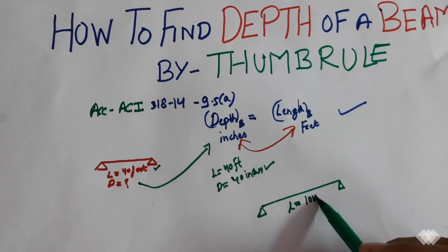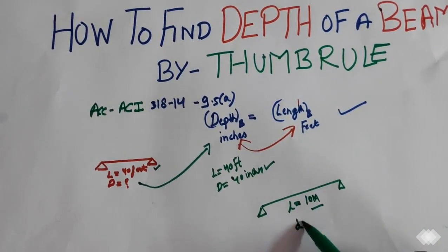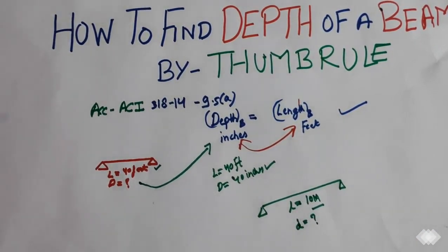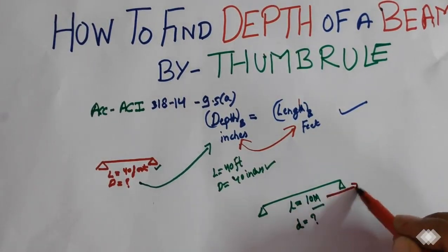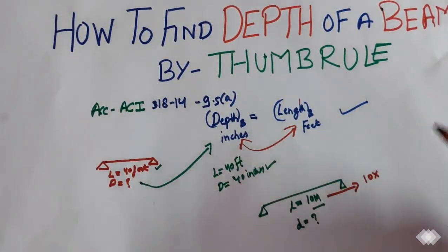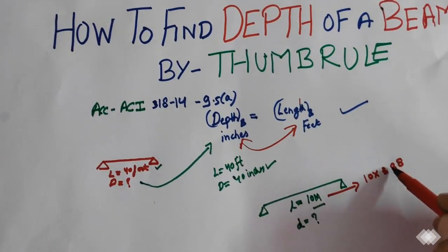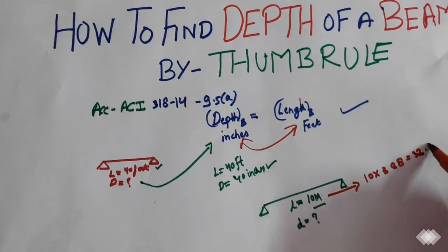For example, if this is the length of beam we have given 10 meters, what will be the depth of the beam? So first of all we will convert this 10 meters to feet. One meter is equals to 3.28 feet, that means 32.8 feet.